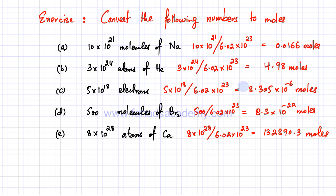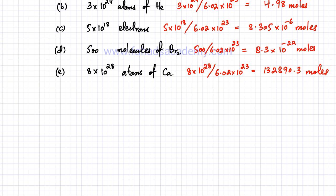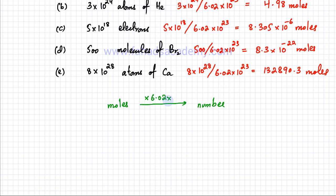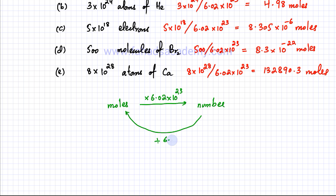To sum up: if you are given moles and want to convert to the actual number, multiply by 6.02 × 10²³. If you are given a number and want to convert back into moles, divide by 6.02 × 10²³. That's your basic conversion between number of particles and moles.